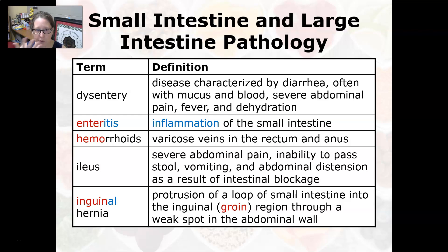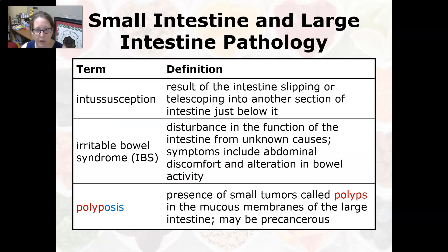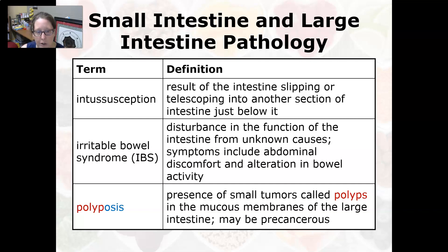With ileus, the vomiting may initially be stomach contents but can become intestinal contents coming back up. An inguinal hernia is a protrusion of a loop of small intestine into the inguinal or groin region through a weak spot in the abdominal wall — infants can be born with that too. Intussusception is a condition in which the intestine slips or telescopes into another section of the intestine just below it, creating a fold. Irritable bowel syndrome, or IBS, is a disturbance in function of the intestine from unknown causes, with symptoms including abdominal discomfort and alteration in bowel activity.